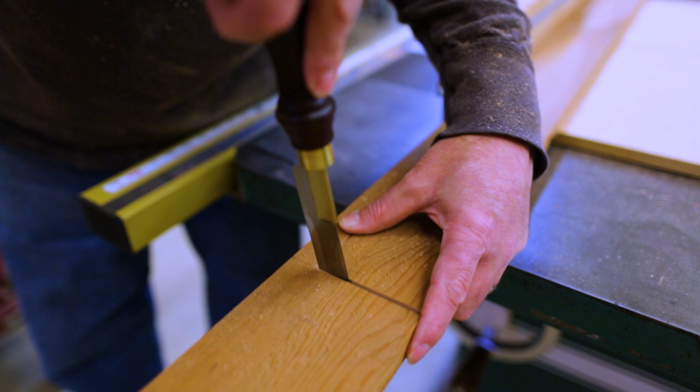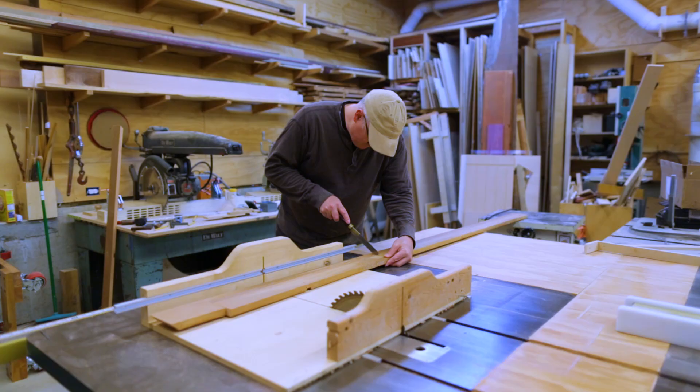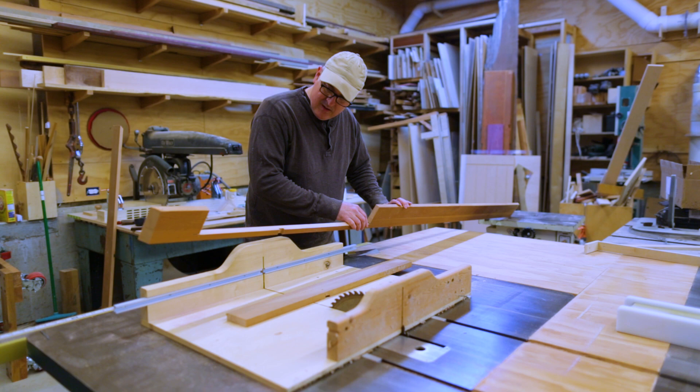Because as you'll see in a minute, the top piece is just a really small, thin piece that just covers the thickness of the table.